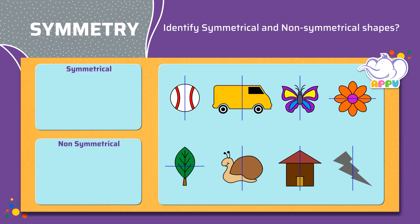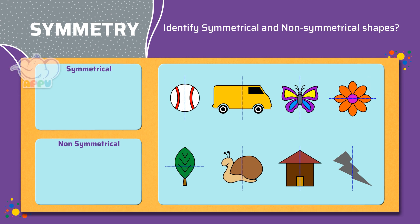Is the ball symmetrical along the dotted line? Yes. When we fold it along the dotted line, we get two equal halves. So this ball is symmetrical. Let's place it here.